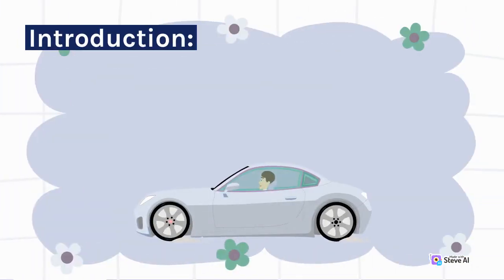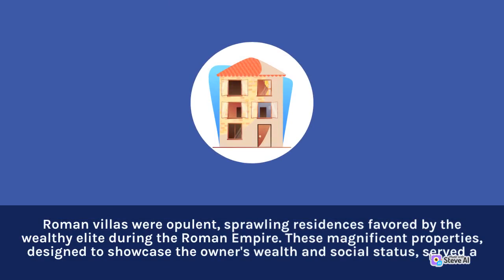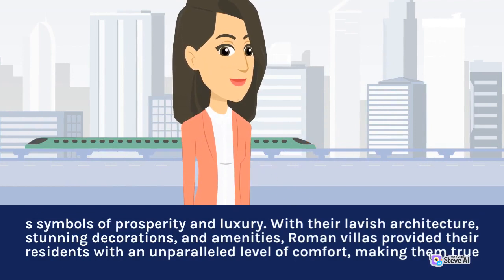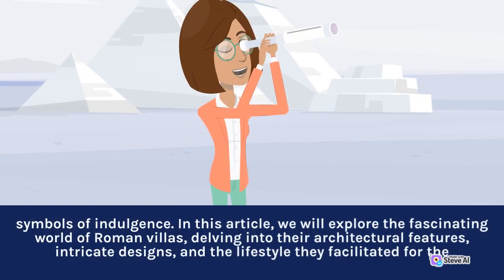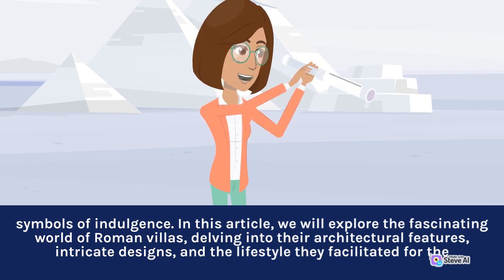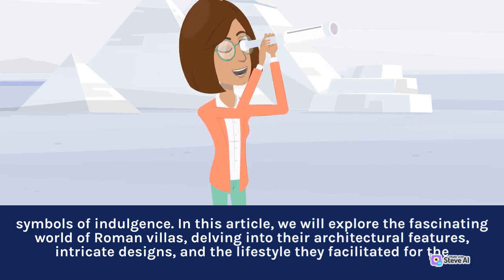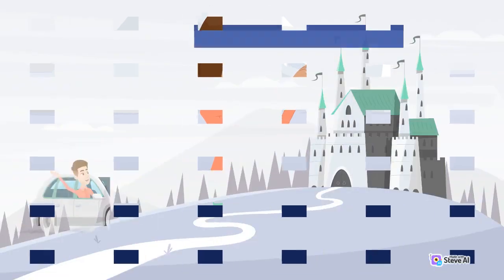Introduction. Roman villas were opulent, sprawling residences favored by the wealthy elite during the Roman Empire. These magnificent properties, designed to showcase the owner's wealth and social status, served as symbols of prosperity and luxury. With their lavish architecture, stunning decorations and amenities, Roman villas provided their residents with an unparalleled level of comfort, making them true symbols of indulgence. In this article, we will explore the fascinating world of Roman villas, delving into their architectural features, intricate designs, and the lifestyle they facilitated for affluent owners.